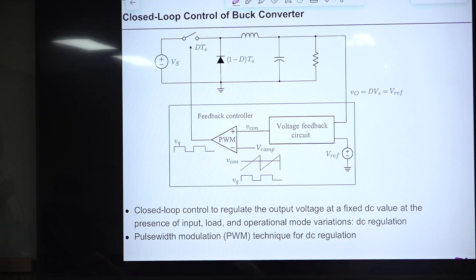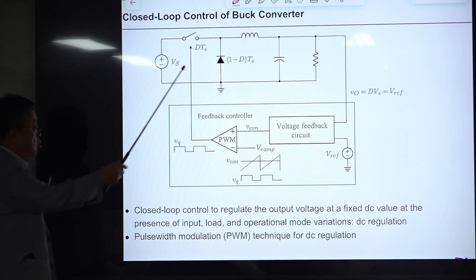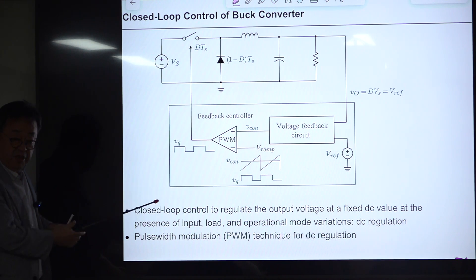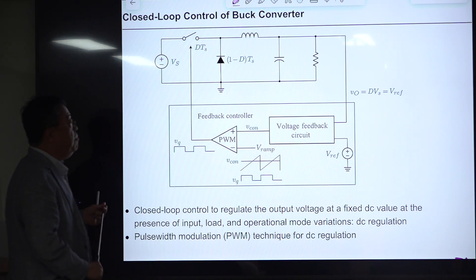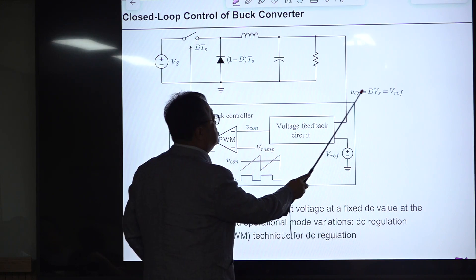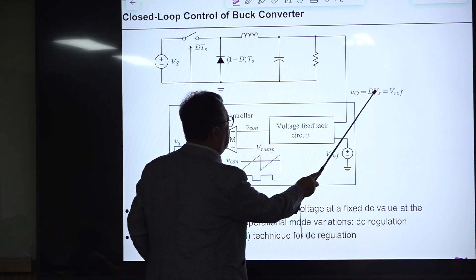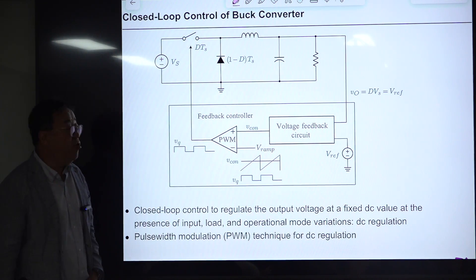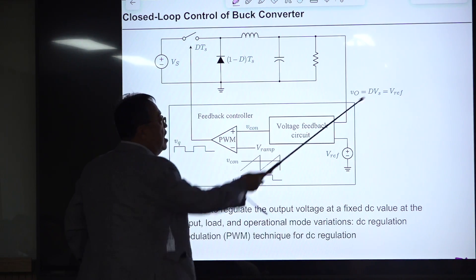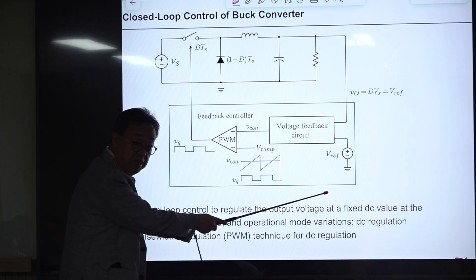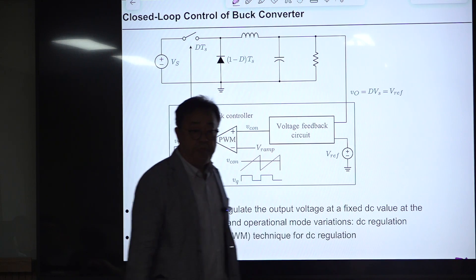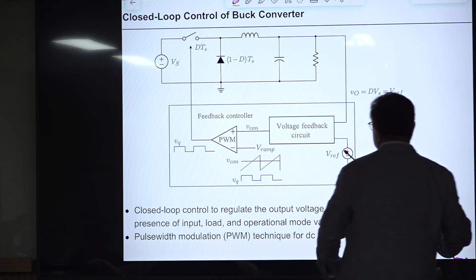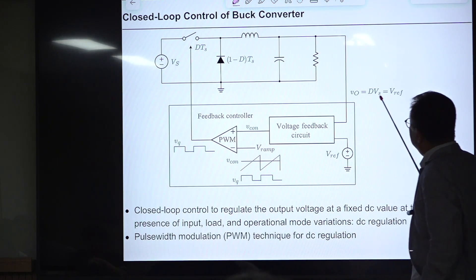The first sub-topic is closed-loop control and DC regulation. This is the schematic diagram of the converter with feedback controller. This is the power stage — let us assume CCM. The output voltage in CCM is D·V_S, and we want the output voltage to equal the reference voltage.